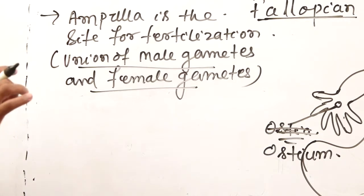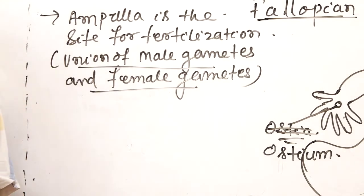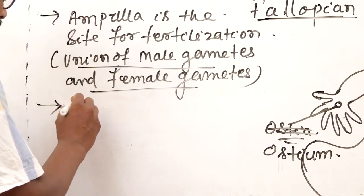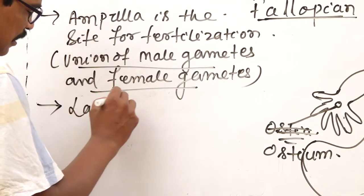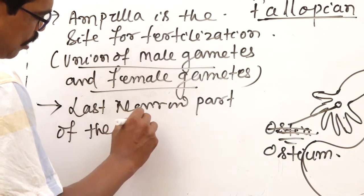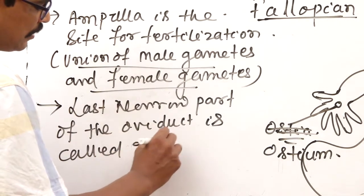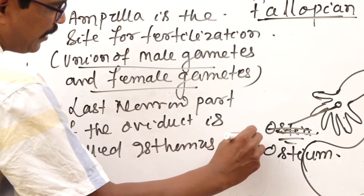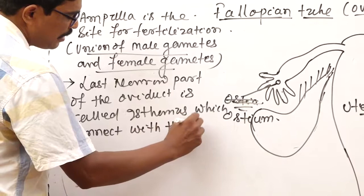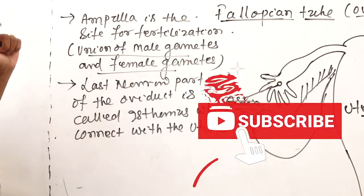There is a narrow last part of the oviduct called the isthmus, which connects with the uterus. What is the function of the fallopian tube? The fallopian tube conveys the female gametes from the ovary to the uterus.